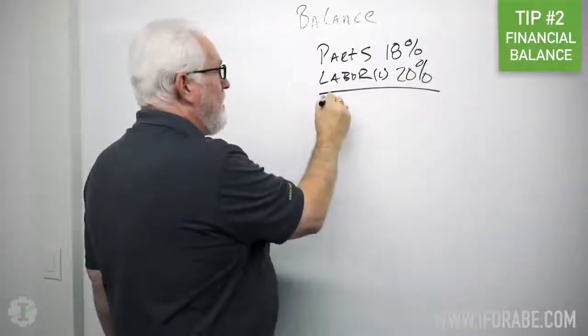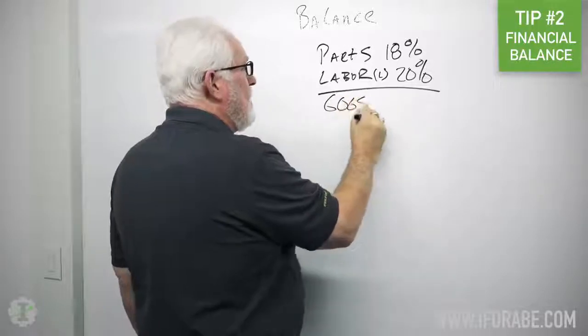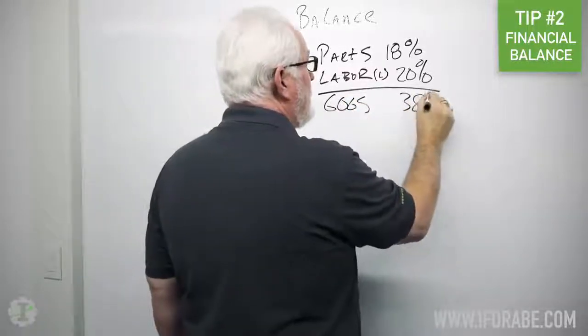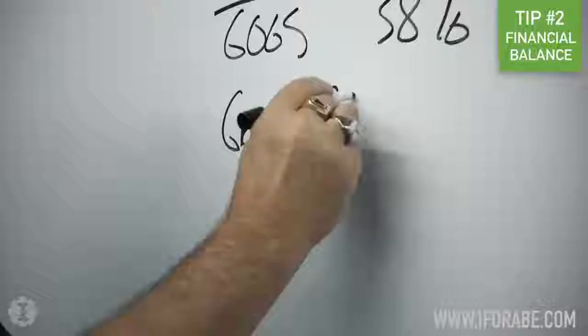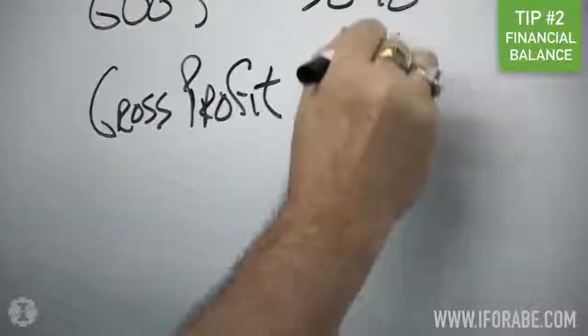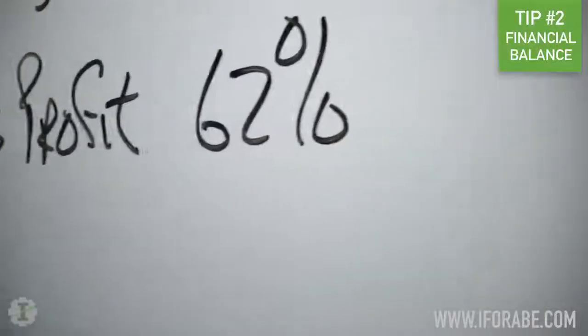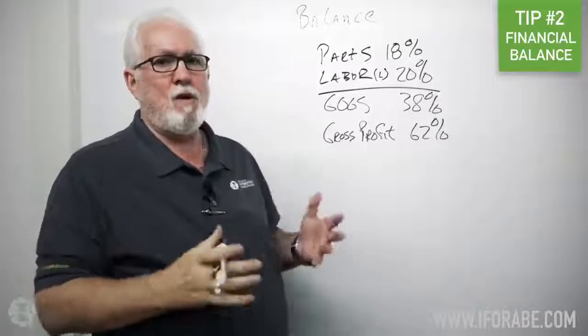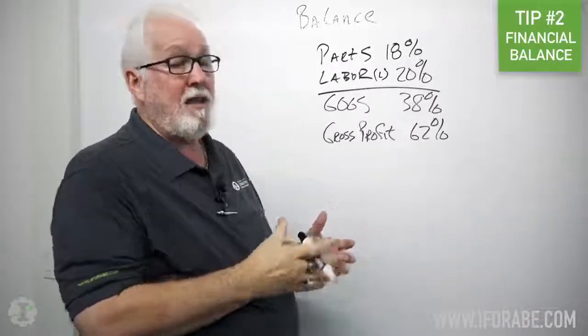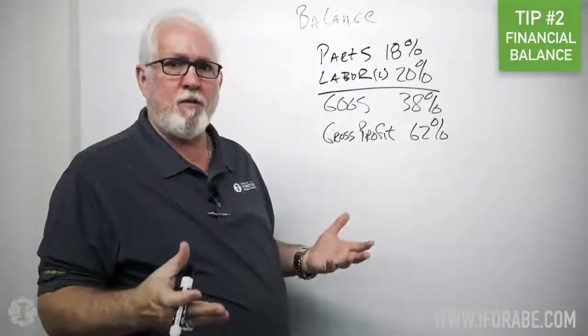Okay, and that's going to give me a cost of goods sold of 38% and a gross profit of 62%. Now here's the deal. There are people out there saying don't worry about your gross profit.